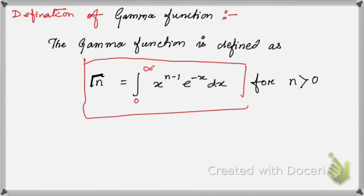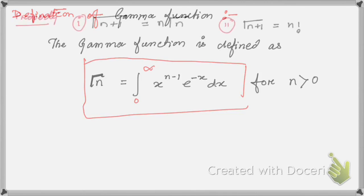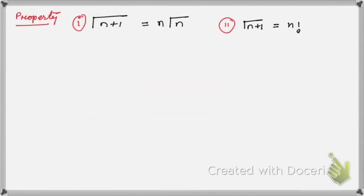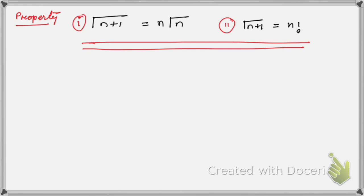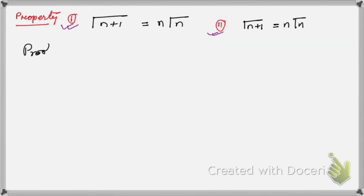Now let us discuss two very important properties of the gamma function. Let me go to the next slide. These are the two very important properties, and now let us prove them one by one. For the first one, in order to prove it, by definition of the gamma function, we know that Γ(n) is given by this integral.